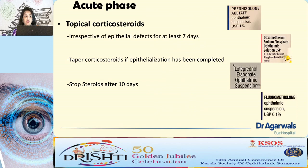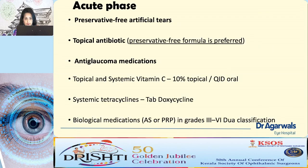In the acute phase, start the patient on copious topical steroids even if there is an epithelial defect. Preferable choices are prednisolone acetate or dexamethasone for their stronger anti-inflammatory action. After seven days, taper steroids as collagen lysis can cause further corneal melting. Additional treatment includes preservative-free artificial tears at least half-hourly, topical antibiotic ointments, and anti-glaucoma medications since alkalis can cause trabeculitis.